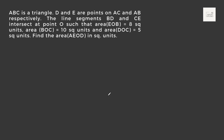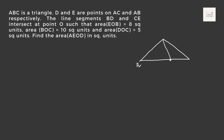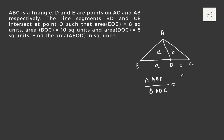Before moving to the next example, let us understand this: if we have triangle ABC and a point D on line segment BC, and the ratio of BD:DC is A:B, then the area ratio of triangle ABD to triangle ADC is also A:B. This is the concept we can use along with mass point theorem in calculating areas of triangles.